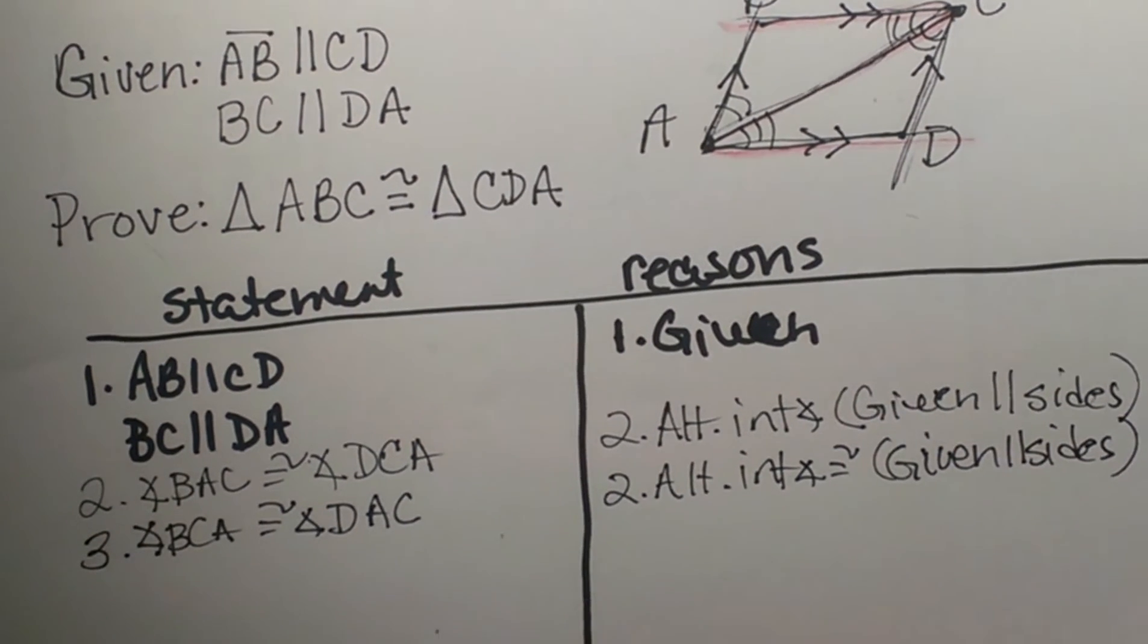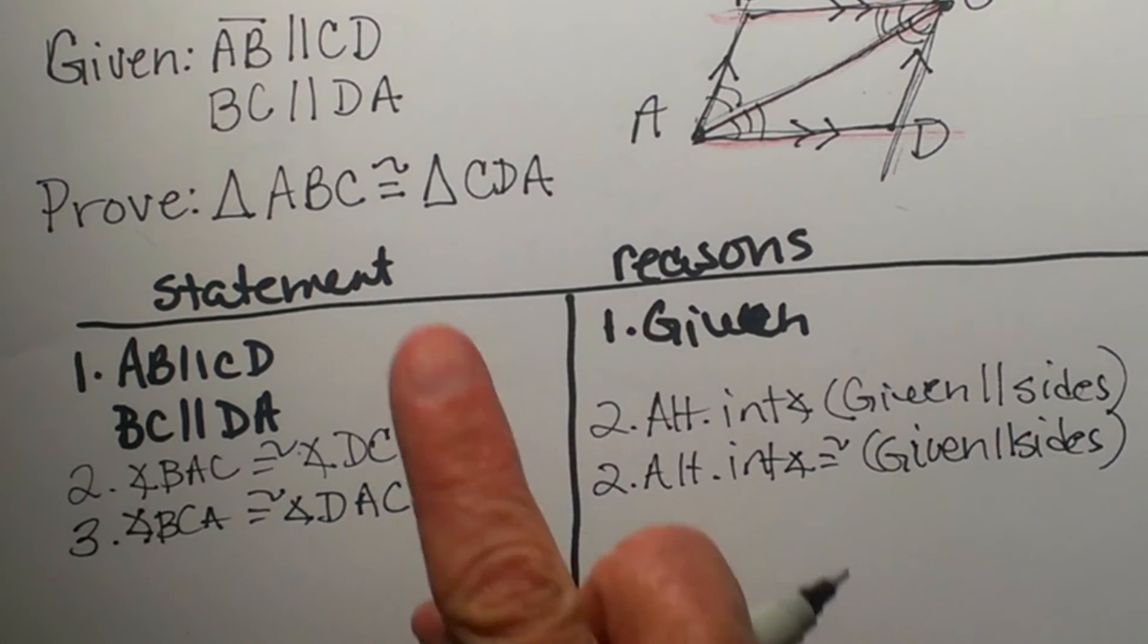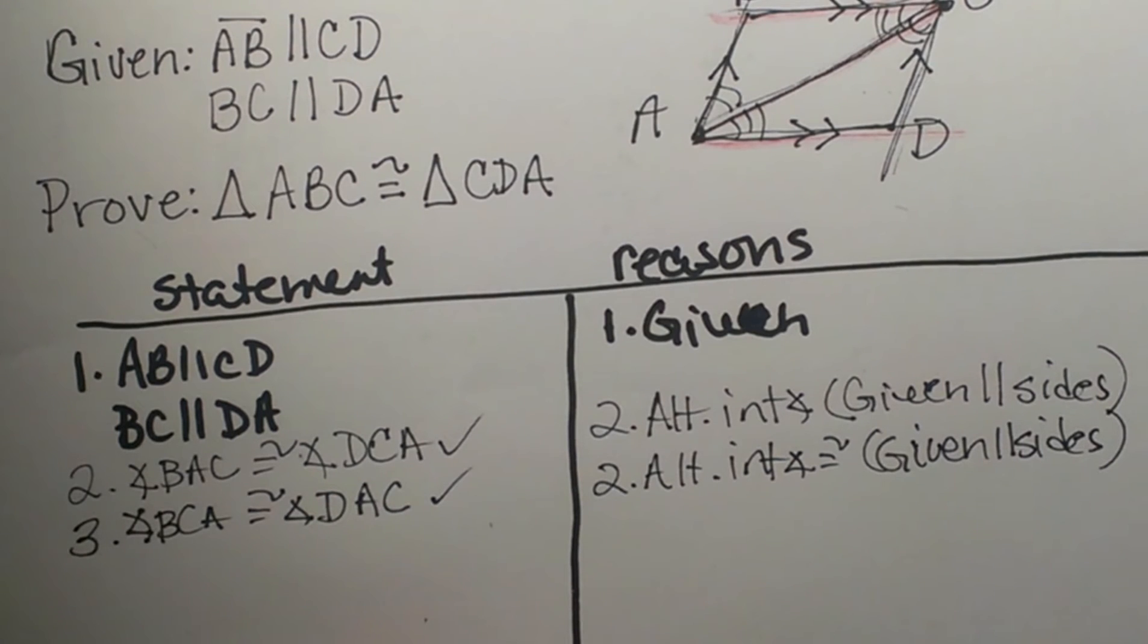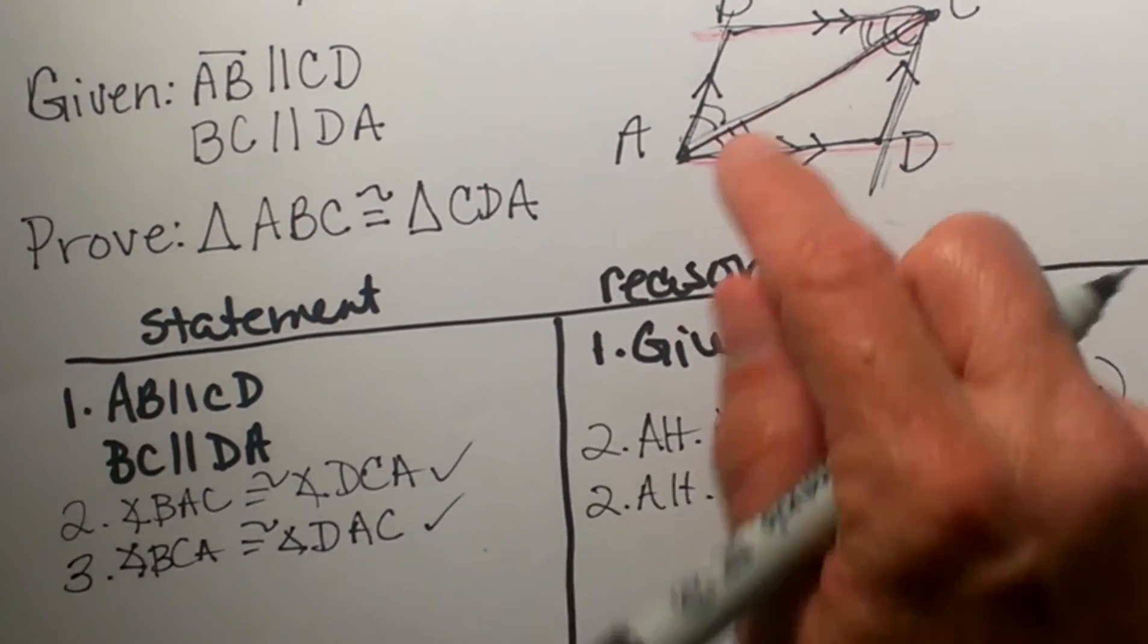So that gives us one or two congruent parts. We need a third congruent part to say the triangles are congruent. Well notice that these two triangles share the side AC.